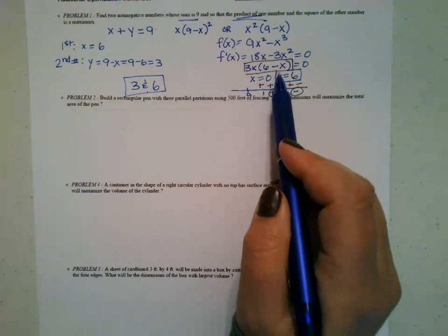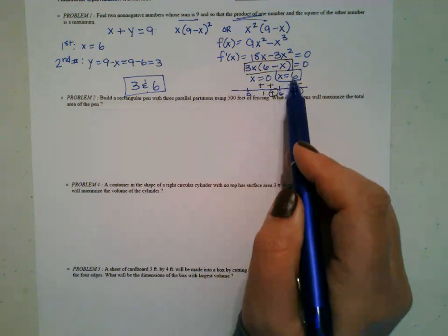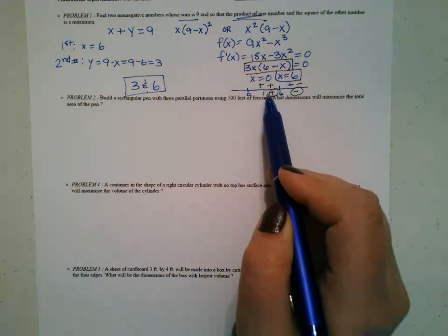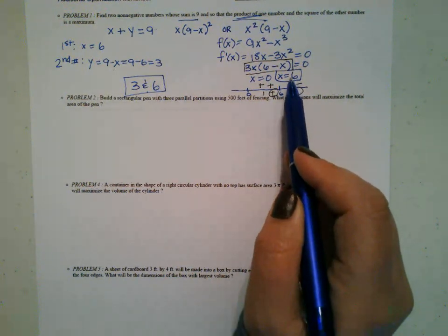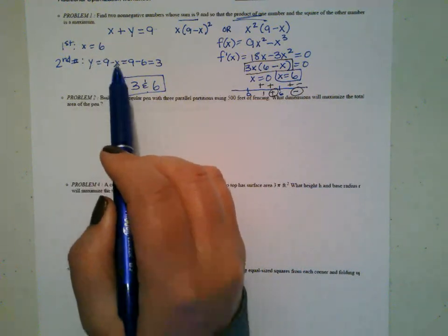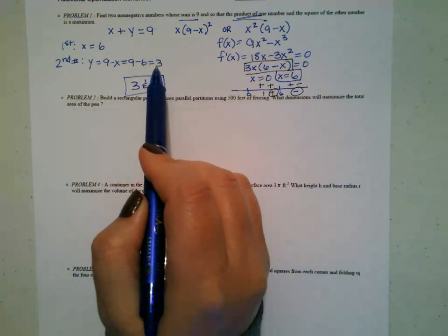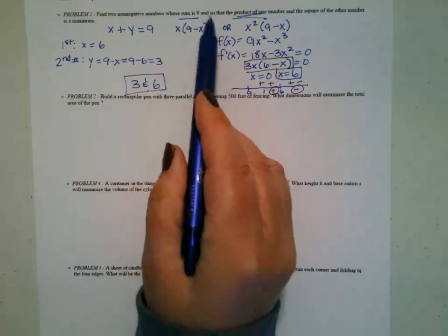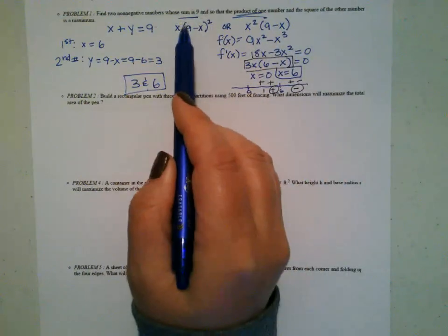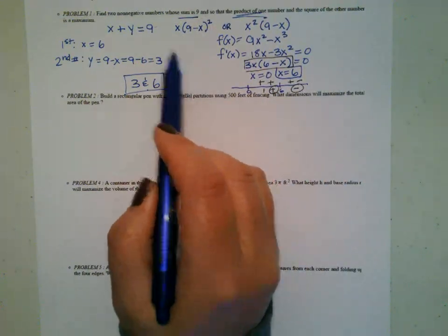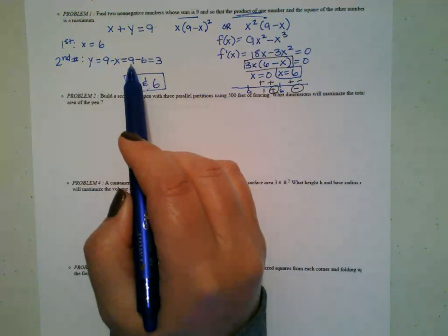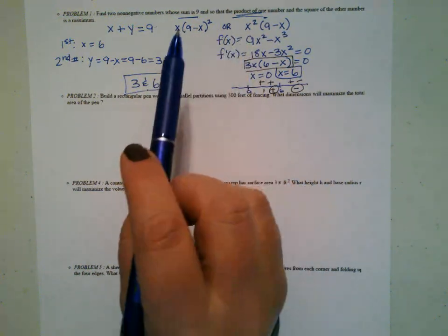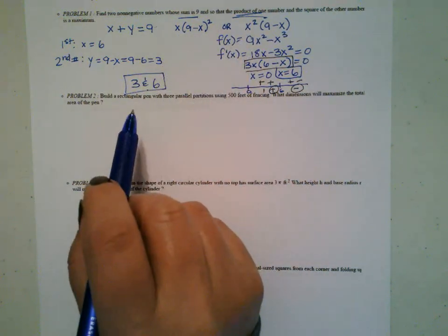My recording wasn't going, but when I set both equal to zero I got two answers. Using my number line, it shows me the maximum is when X equals six. So X = 6 is one of my numbers, and nine minus six gives me three. For those who used the other form, your X came out to be three, and nine minus three is six. Either way, whichever way you do it, you still get the correct answer.